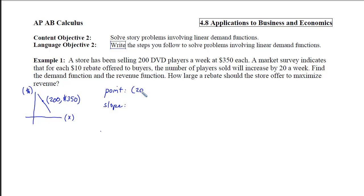So I can use that point, 200 comma 350. It's important that you use the number of items versus the price in this order. If you mix them up, you're going to be finding the incorrect demand function. We want the independent variable to be the number of items that are produced or sold. Next we need to find the slope.